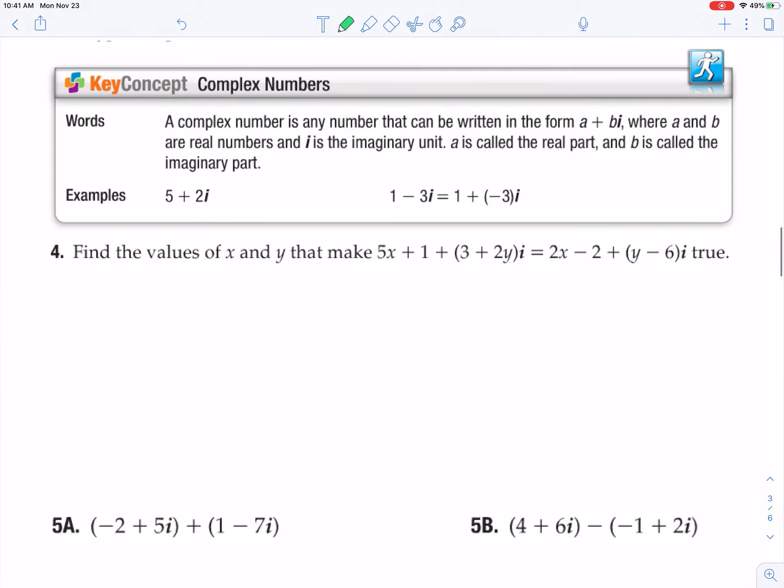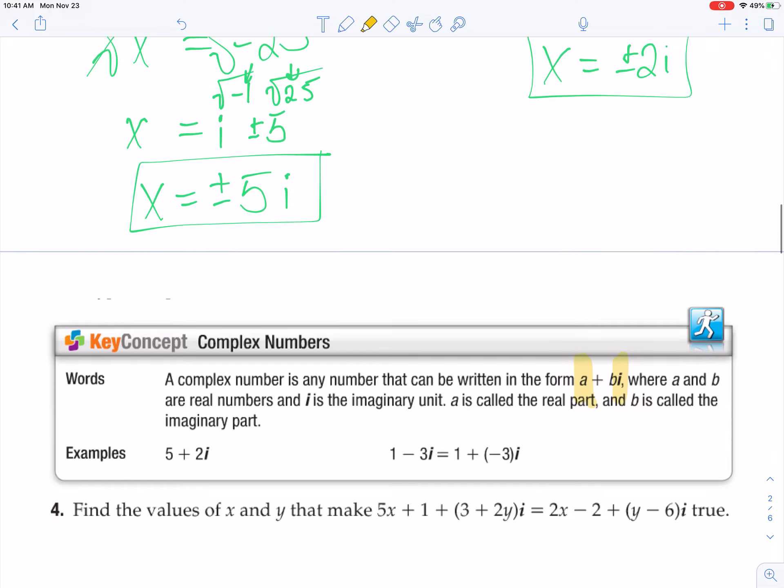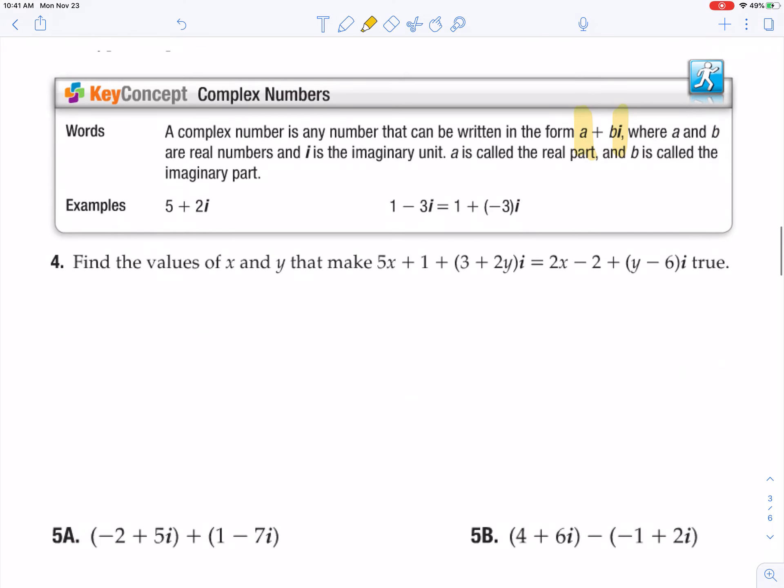Okay, so next let's check out complex numbers. A complex number is any number that can be written in the form a plus bi. A is going to be a real number, so like 5, whereas the bi is going to be that imaginary number. All of my answers up here were those imaginary number pieces. So A is going to be called the real part. B is going to be called the imaginary part.